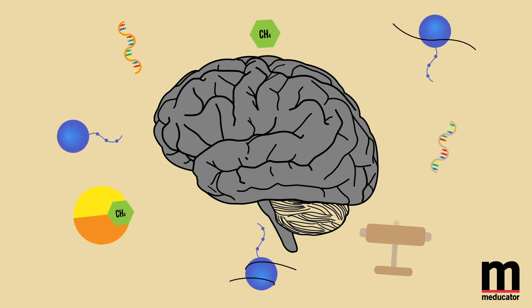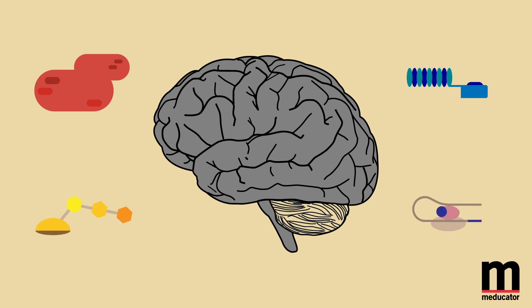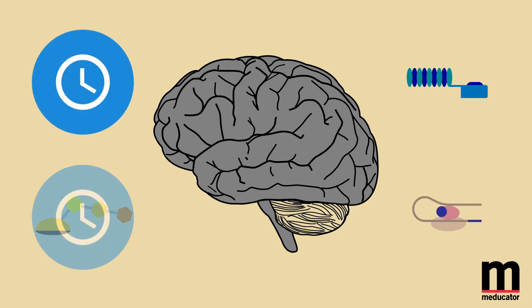Overall, epigenetic modifications play an important role in the development of major depressive disorder. While there are potential methods that can be used to correct these modifications, most of these techniques are still in their infancy.